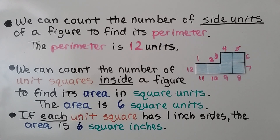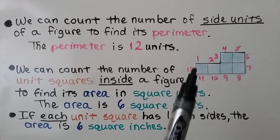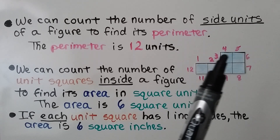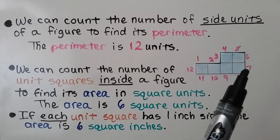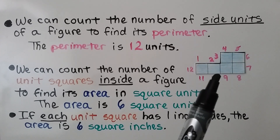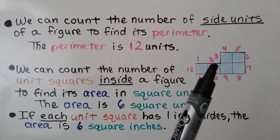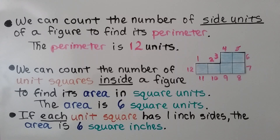We can count the number of side units of a figure to find its perimeter — remember, perimeter goes around the outside. This perimeter is one, two, three... twelve units. We don't know if they're inches or centimeters, so we just say twelve units. We can also count the number of unit squares inside a figure to find its area. We have six blue squares, so the area is six square units. If each unit square has one-inch sides, the area is six square inches.